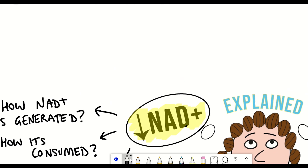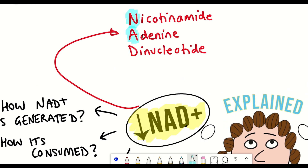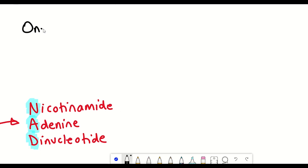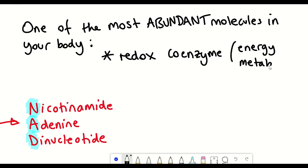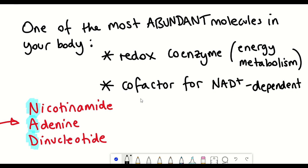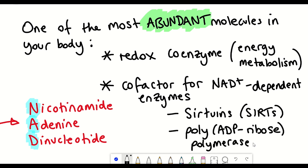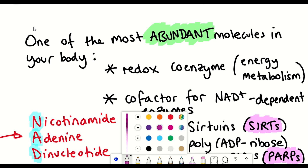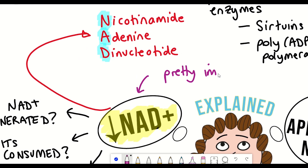The best place to start is with NAD itself. NAD stands for nicotinamide adenine dinucleotide, and it is one of the most abundant molecules in the human body. It is important not only as a coenzyme for redox reactions and energy metabolism, but also as an essential co-factor for enzymes — notably the sirtuin family and poly-ADP ribose polymerases (PARPs) important in DNA repair. It's thought that more than 300 enzymes rely on NAD+ for their activity.